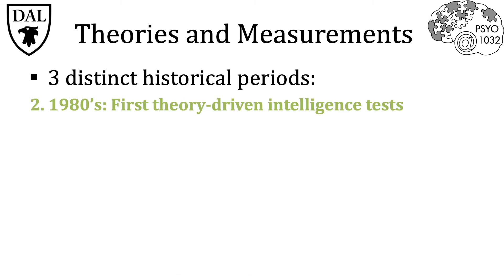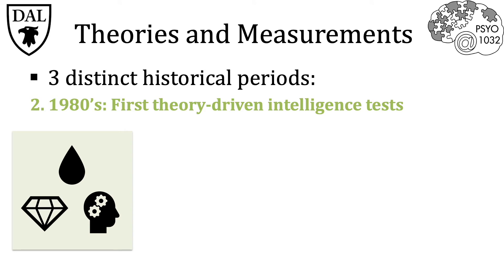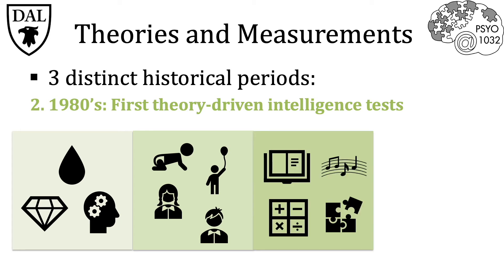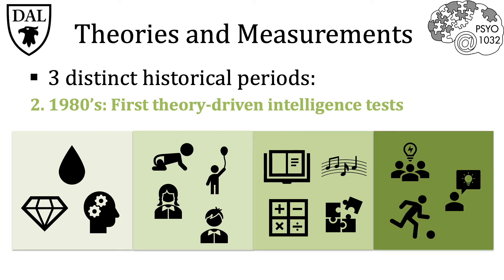The second era of intelligence testing came in the 1980s with the Kauffman Assessment Battery for Children, which directly challenged the Wechsler Intelligence Test in four specific ways. First, it was guided by theories of fluid and crystallized intelligence and Piaget's theory of cognitive development. Second, it recognized fundamentally different intelligence characteristics for different ages among children. Third, it measured several different aspects of intelligence. And finally, it assessed different types of learning styles.